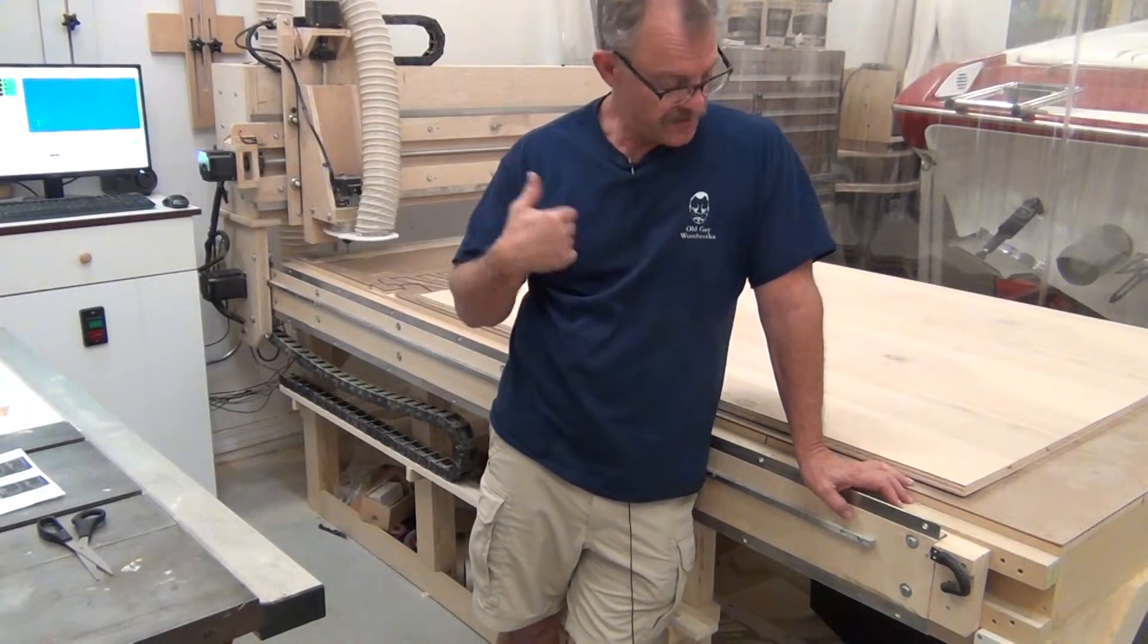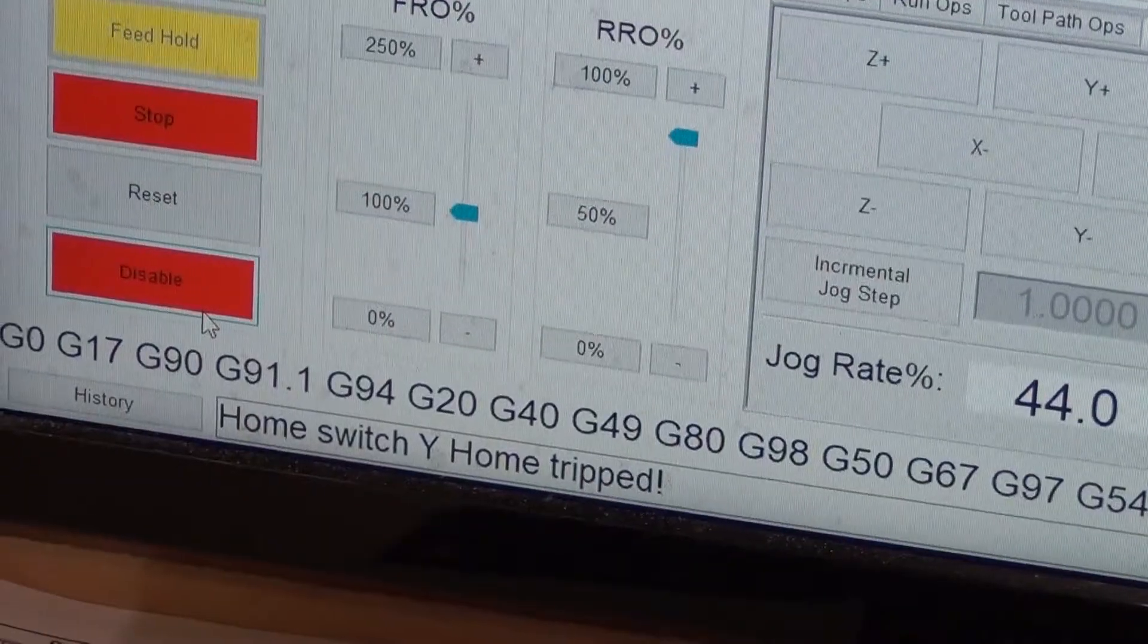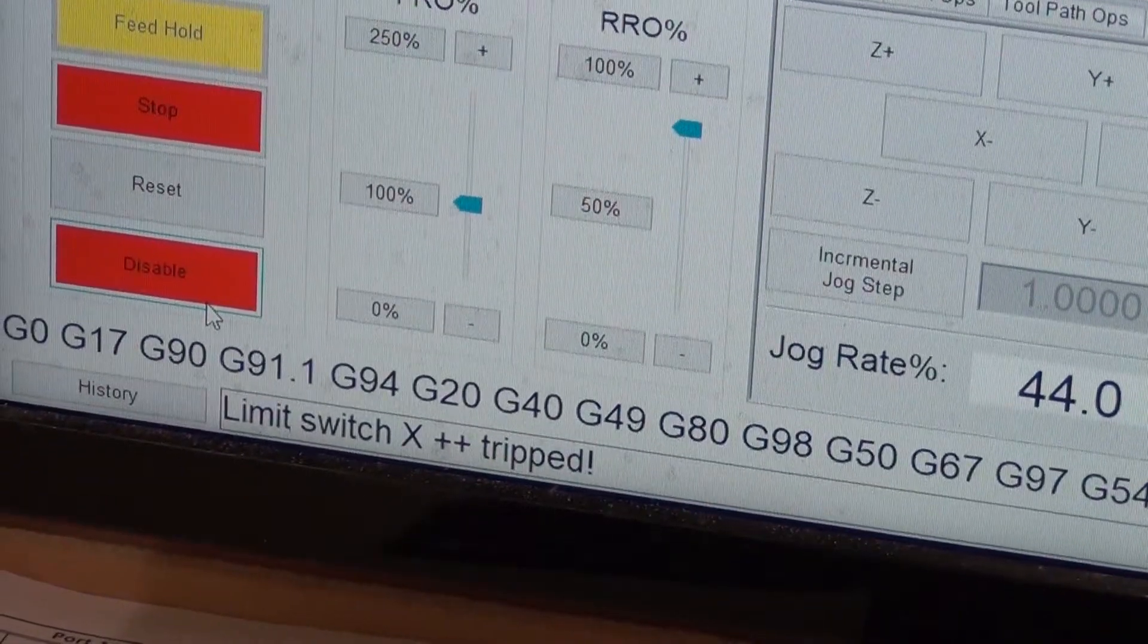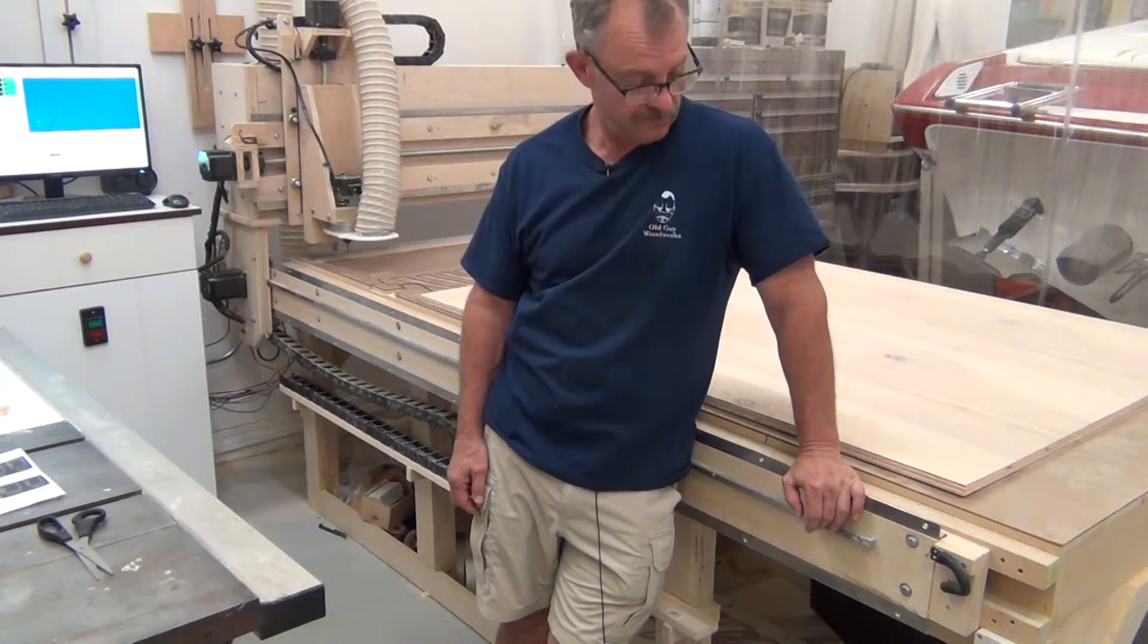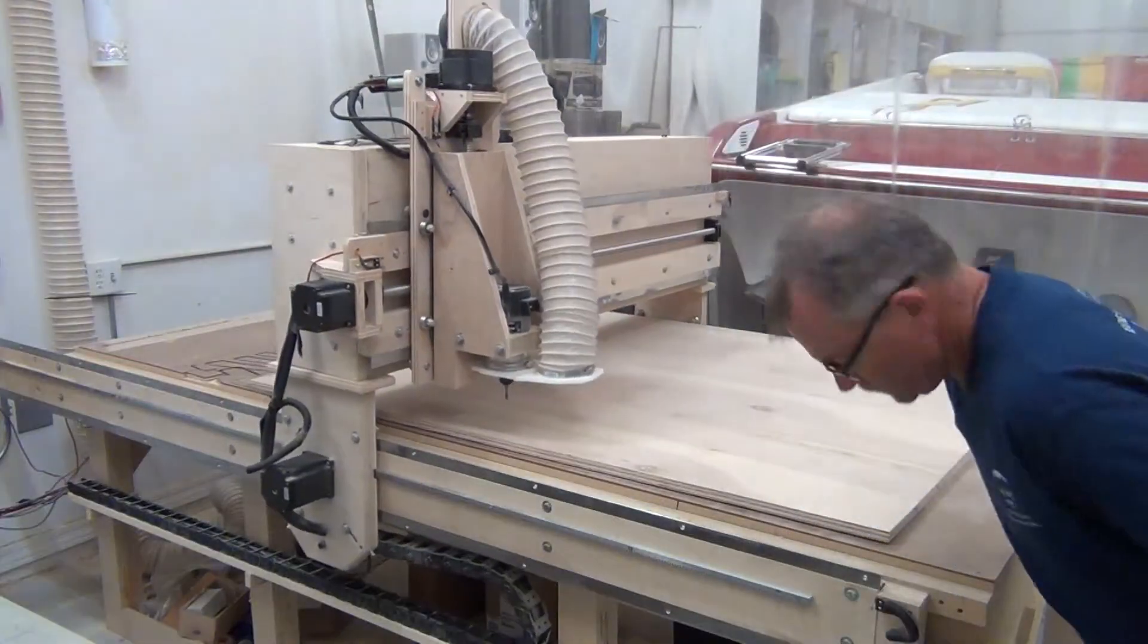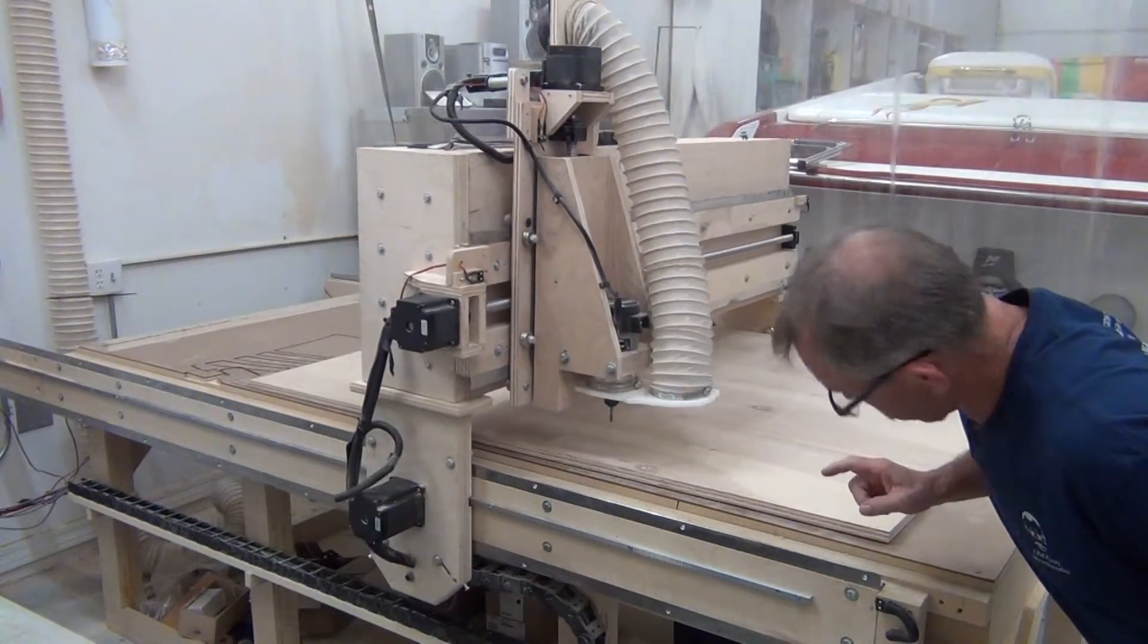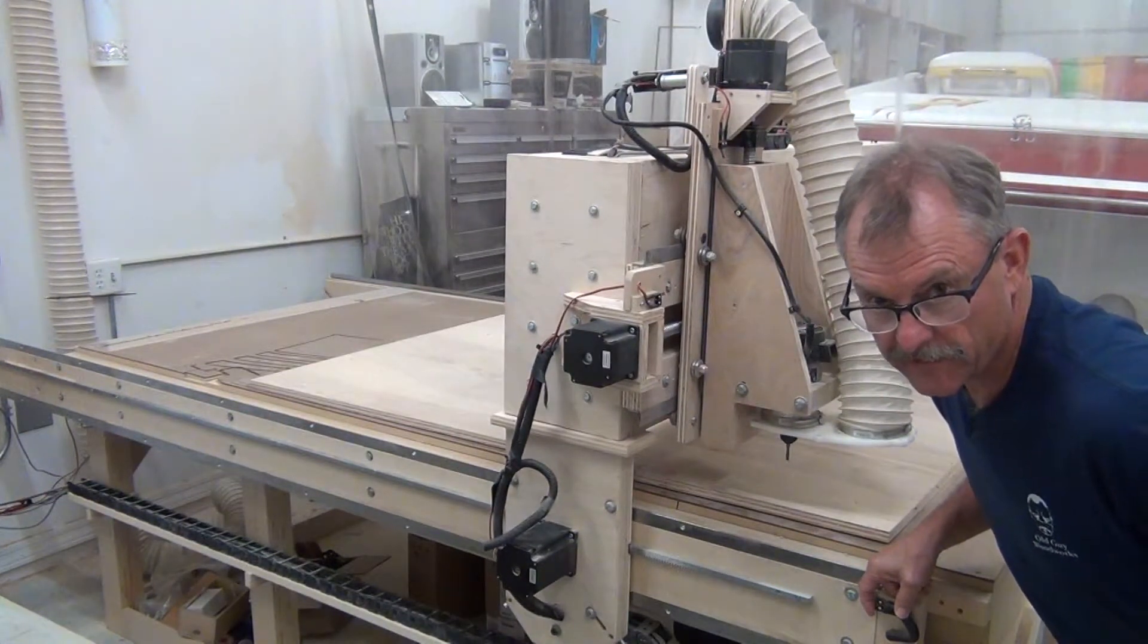So before I actually run the gantry back and forth and all around, I'm just going to do a simple test and hit this switch right here. And it should change. It just said X positive limit switch is triggered. That's a good sign. So let's see if this thing actually works before it actually gets here. I'm liking that.